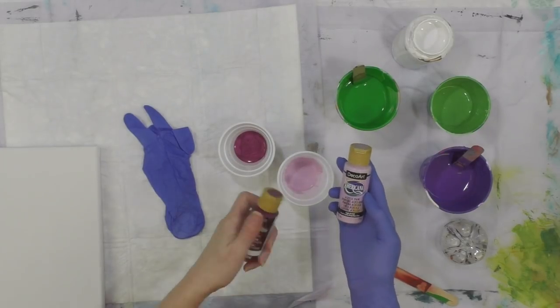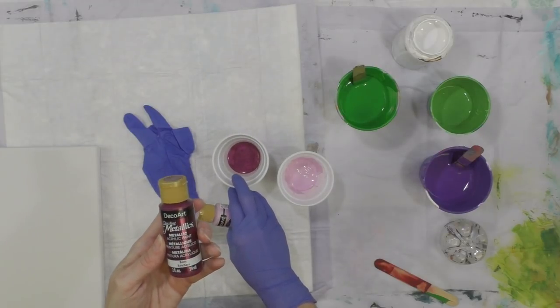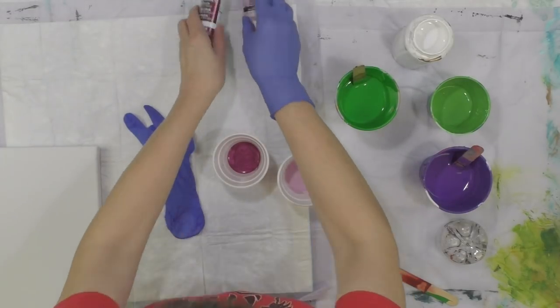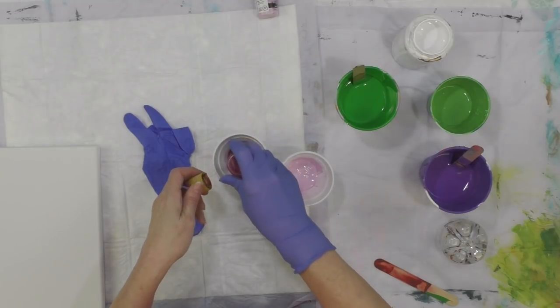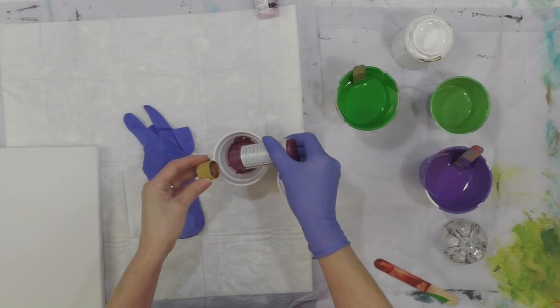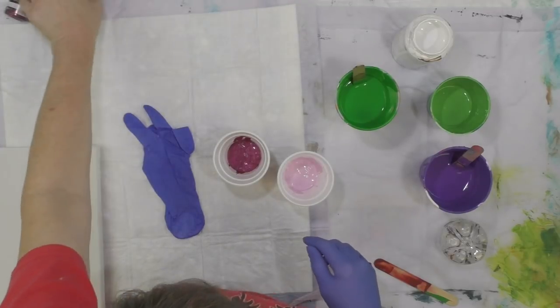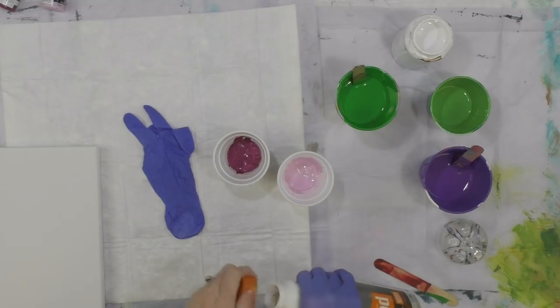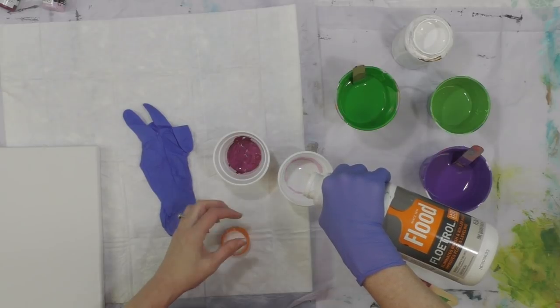The last two I'm mixing are light orchid and this is a metallic called berry. I think I got some more in the bottle, I'm going to try to get all the two ounces out that I can. I'm mixing these one-to-one with Flotrol, so I'm going to pour the same amount of Flotrol as I have the paint.